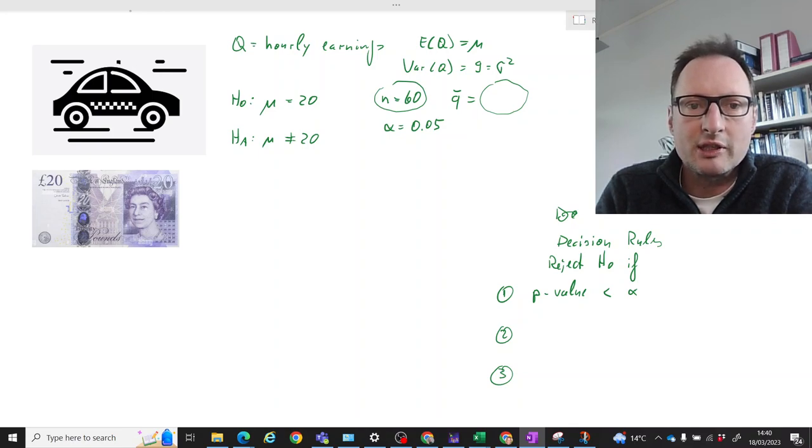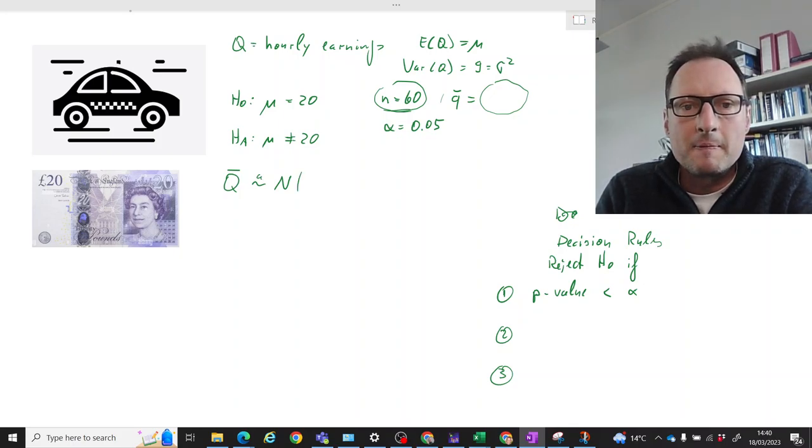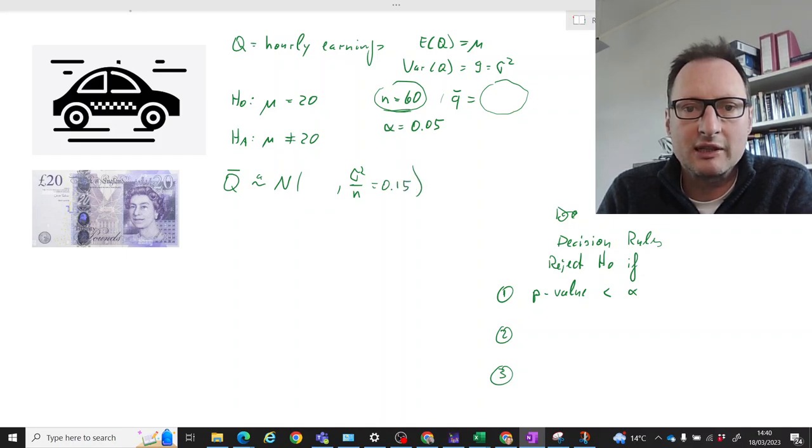So the test statistic we will use: firstly we need to figure out what is the sampling distribution of Q-bar, the sample mean. Assuming that the central limit theorem kicks in with a sample size of 60, we will have a variance of sigma squared over n. That is 9 divided by 60, which is 0.15 when you calculate that.